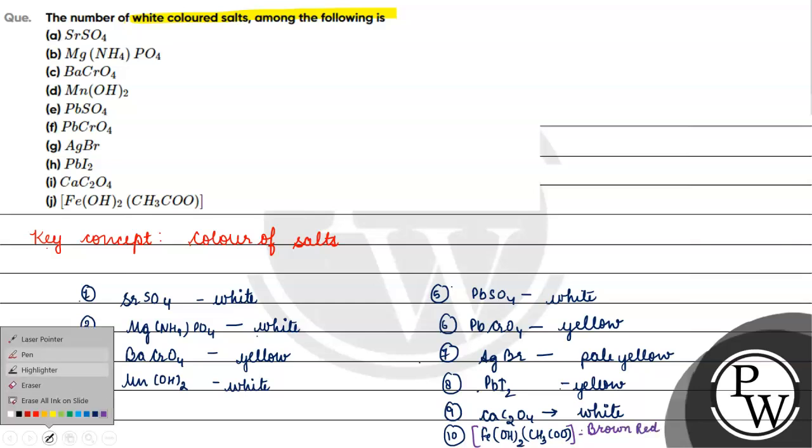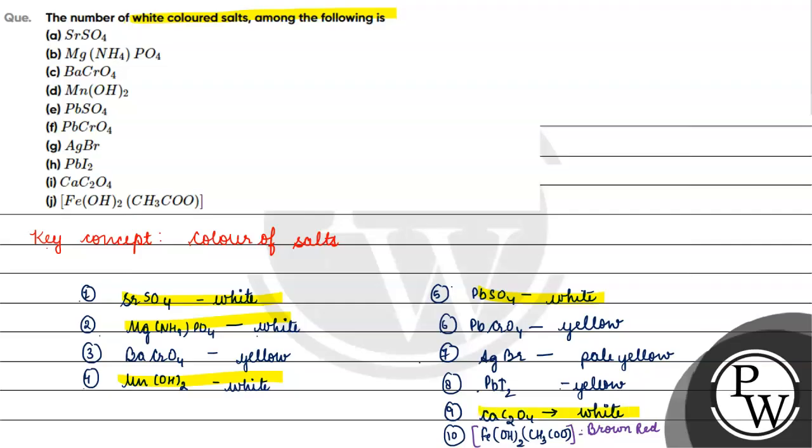So white in color, white in color. Can we count? 3, 4, 5... 5 is the answer.